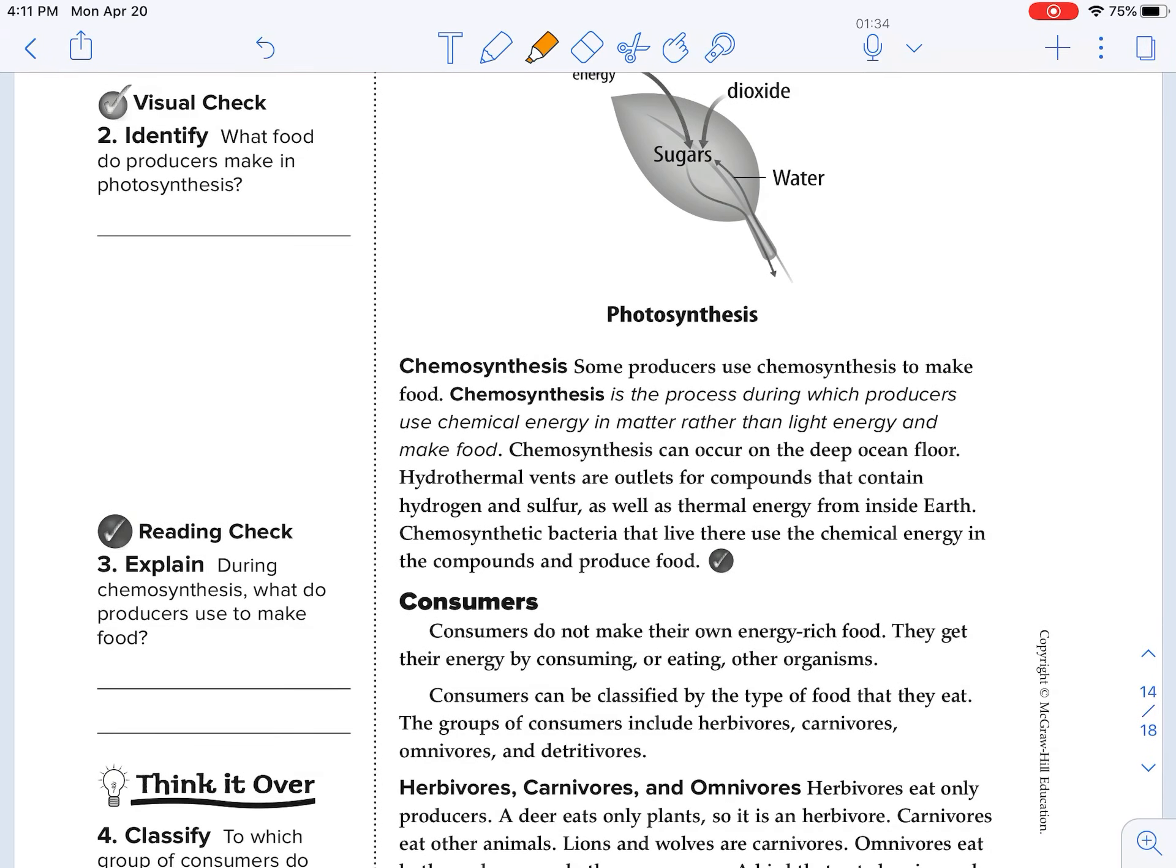Chemosynthesis. Some producers use chemosynthesis to make food. Chemosynthesis is the process which producers use chemical energy in matter rather than light energy and make food. Chemosynthesis can occur on the deep ocean floor. Hydrothermal vents are outlets for compounds that contain hydrogen and sulfur, as well as thermal energy from inside earth. Chemosynthetic bacteria that live there use the chemical energy in the compounds and produce foods. Which is why we can't say that all of the producers get their energy from the sun because we have a little bit of chemosynthesis going on.